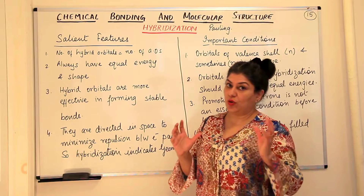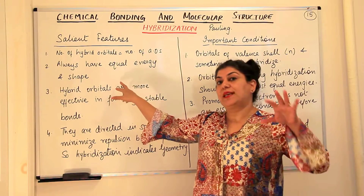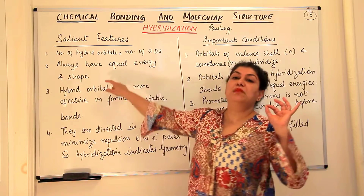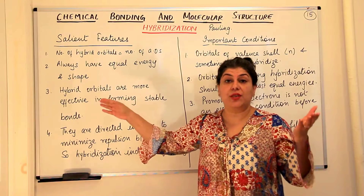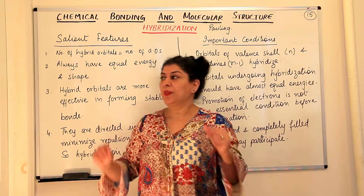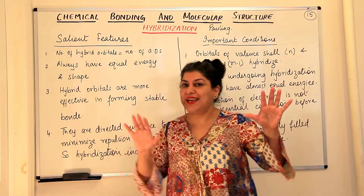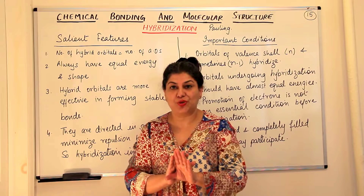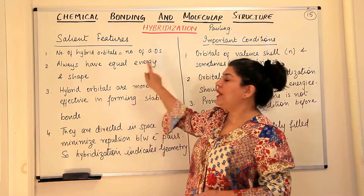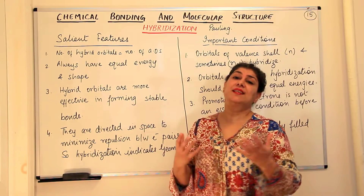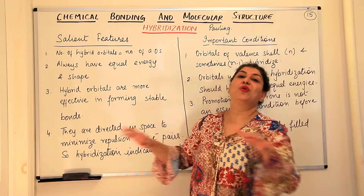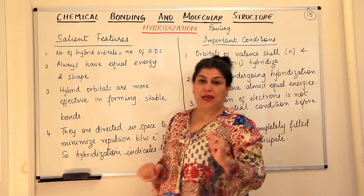The number of atomic orbitals is always equal to the number of hybrid orbitals formed. The second point to remember is that these hybrid orbitals always have equal energy and the same shape. That is the reason hybridization occurs — to impart symmetry to the molecule and make it a balanced structure. These orbitals, which were slightly different in their energies, merge and result in hybrid orbitals that are identical in energy and shape. The only difference during bonding is their orientation in space.